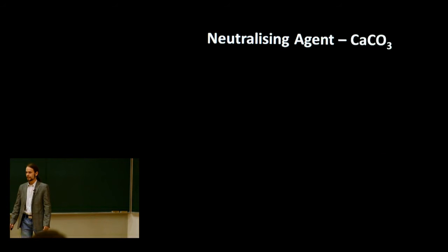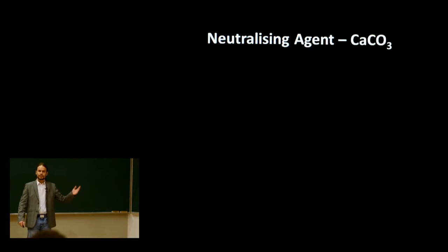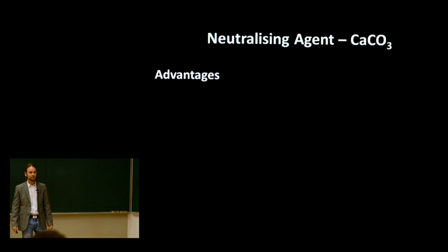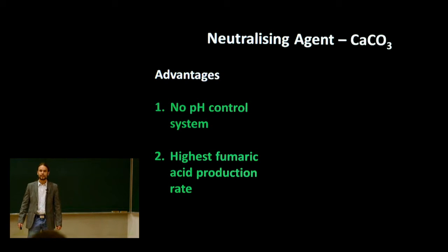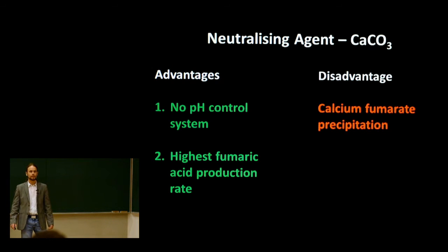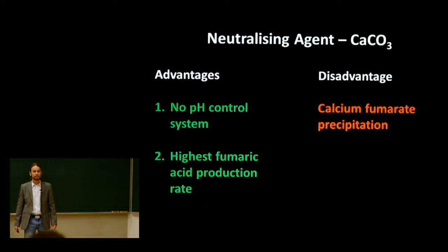Due to the acidic nature of fumaric acid, some sort of neutralizing agent is required. If we would just let the batch ferment on its own without adding such an agent, the pH would drop so drastically that the cells would die — and of course we don't want that to happen. Something like calcium carbonate works pretty well. Advantages of using calcium carbonate are: no pH control system is required during fermentation, which results in a lower overall cost, and also it results in the highest fumaric acid production rate. In theory, the fumaric acid concentrations for this study of around 10 grams per liter should not have a negative impact on the results.